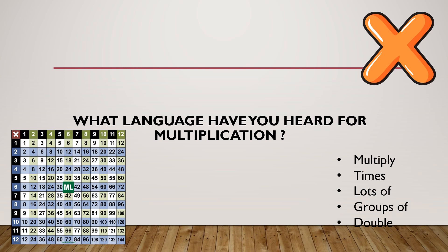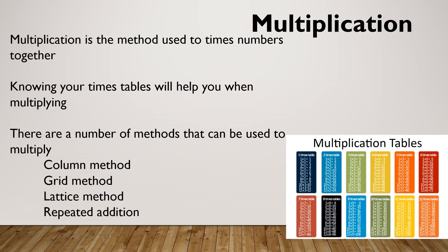You might be asked to multiply these numbers, times these numbers, someone may have five lots of seven sheep — how many sheep do they have altogether — or five groups of seven sheep. These are the words we're looking for. Knowing your times tables is really going to help you. There are a number of methods: column method is looked at in this video, I've done another video on grid method, and there is also the lattice method and repeated addition.